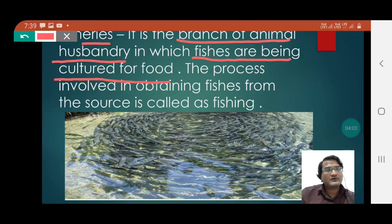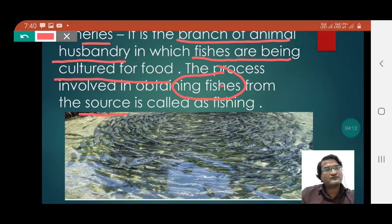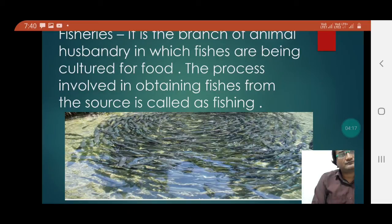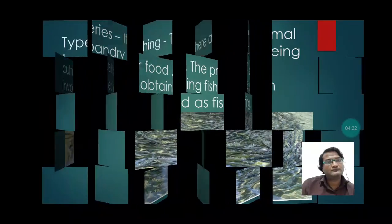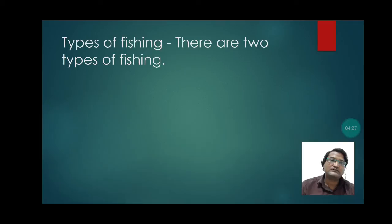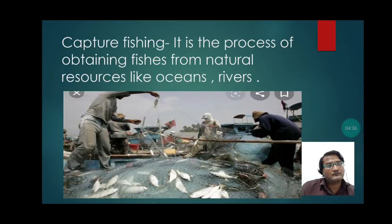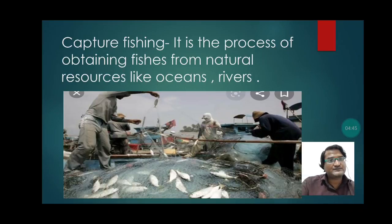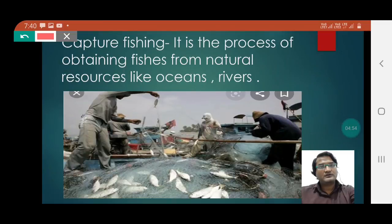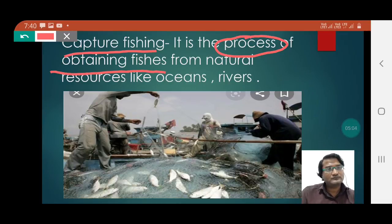The process which is involved in obtaining fishes from the source is called fishing. Types of fishing: There are two types of fishing. Capture fishing is the process of obtaining fishes from natural resources, from various sources like oceans and rivers.